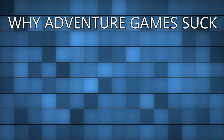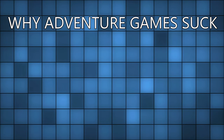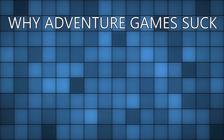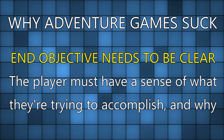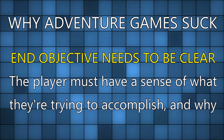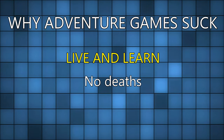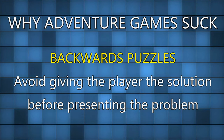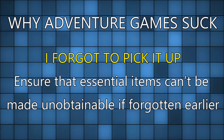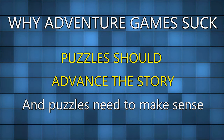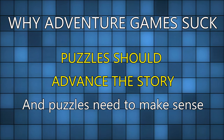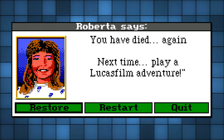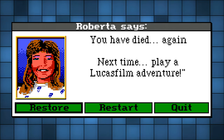In 1989, while developing the concept, Ron wrote an article called 'Why Adventure Games Suck'. This outlined the adventure game tropes he wanted to avoid while making this new game. These included: end objective needs to be clear; the player must have a sense of what they're trying to accomplish and why. Live and learn — no deaths. Backwards puzzles — avoid giving the player the solution before presenting the problem. Ensure that essential items can't be made unattainable if forgotten earlier. Puzzles should advance the story and need to make sense. And give the player options.